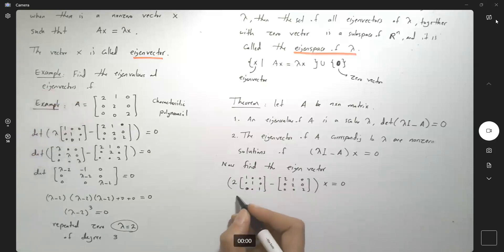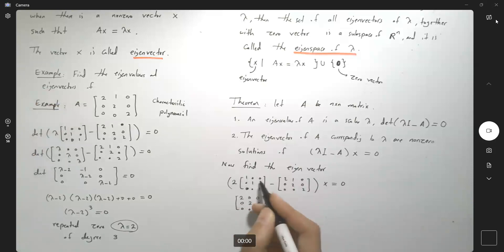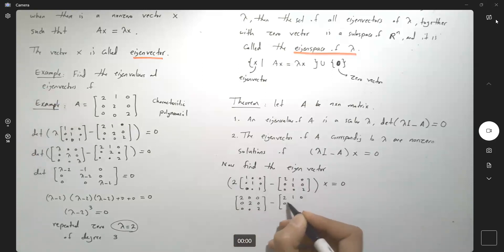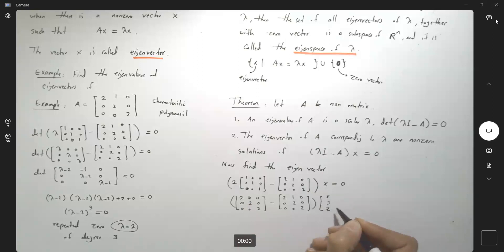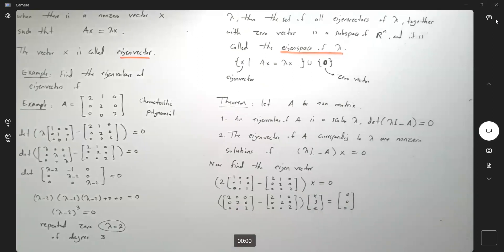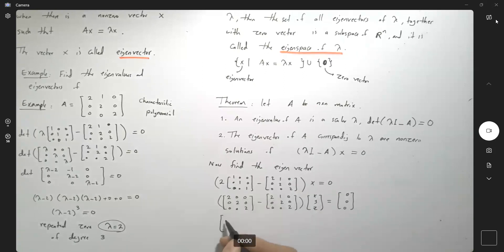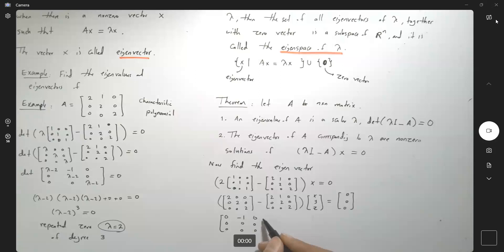So we have 2, 0, 0; 0, 2, 0; 0, 0, 2 — the scalar multiplication — minus the original matrix, then vector x, y, z equal to 0, 0, and 0. Here you have the matrix: 2 minus 2, 0, negative 1; 0, 2 minus 2, 0; 0, 0, 0 — times x, y, z equal to 0, 0, 0.